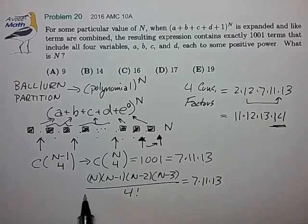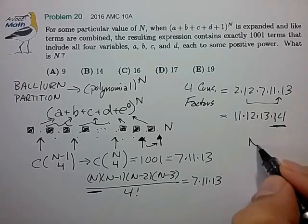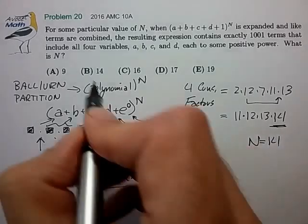And 14 now is equal to this highest value in our consecutive integer factors. So n is equal to 14, and that is choice B.